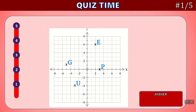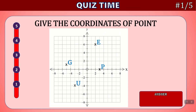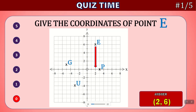And now it's quiz time. Let's see if you can answer these questions in five seconds or less. Give the coordinates of point E. Time's up. The answer is two comma six. We can see that E, if we look down to the x-axis, is at two. And then if we go across to the y-axis, there is a six. So E is at two comma six.